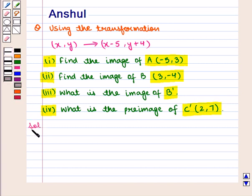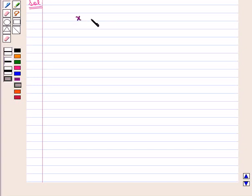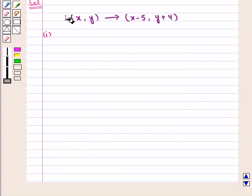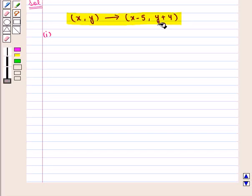Now let us start with the solution. We are given a transformation function: x, y transforms to x minus 5, y plus 4. In the first part of the question, we need to find the image of point A having coordinates minus 5, 3. We make use of the given transformation function to find its image.